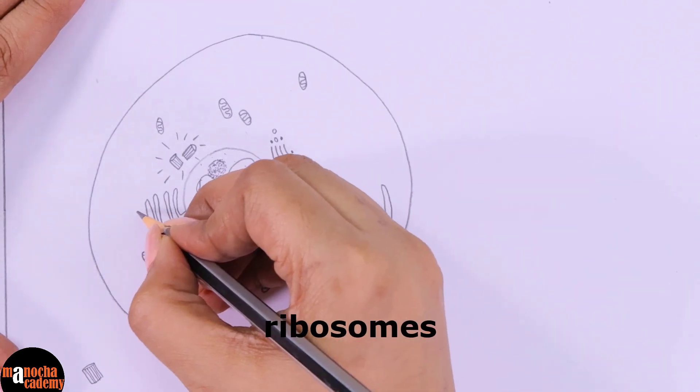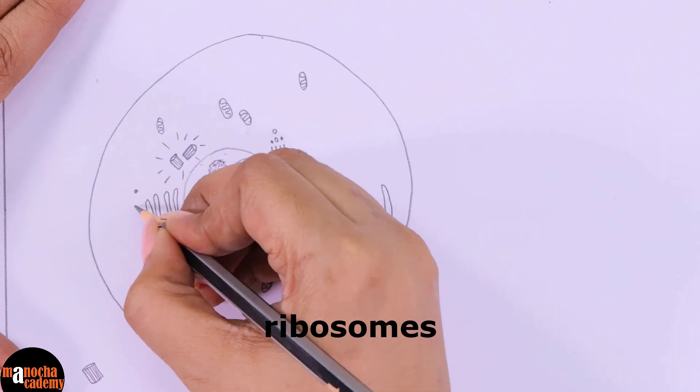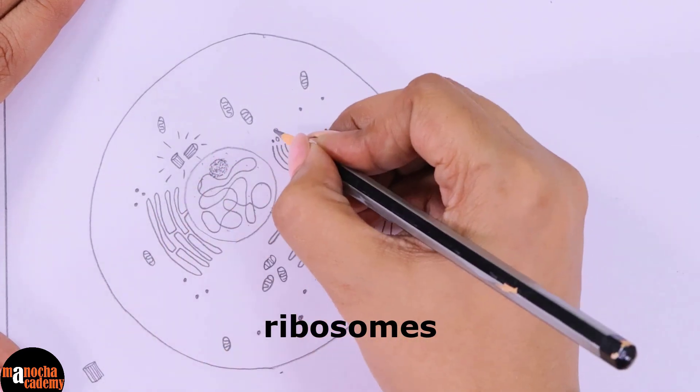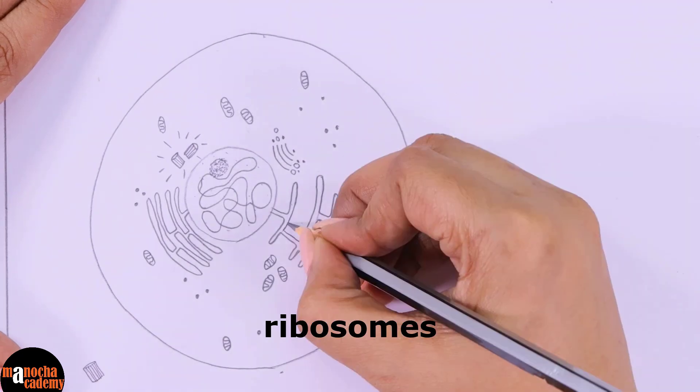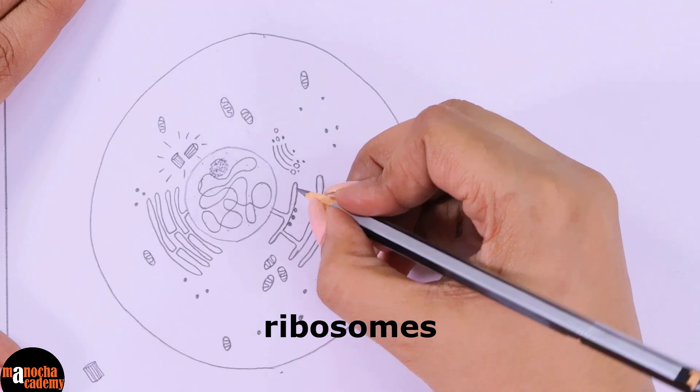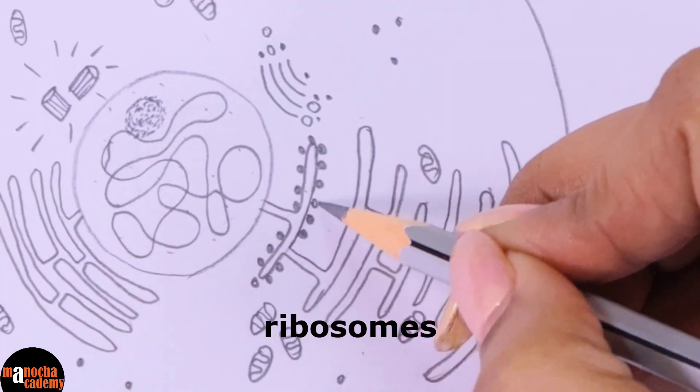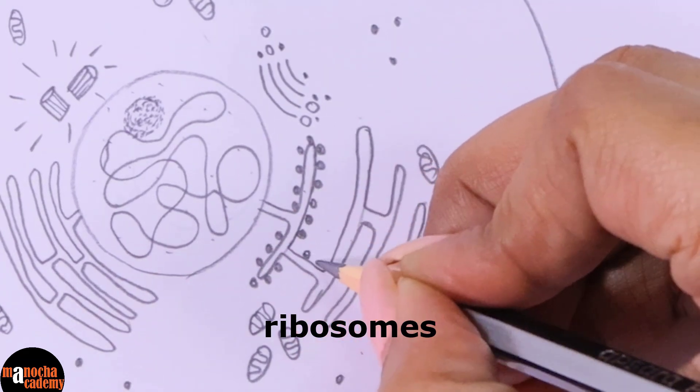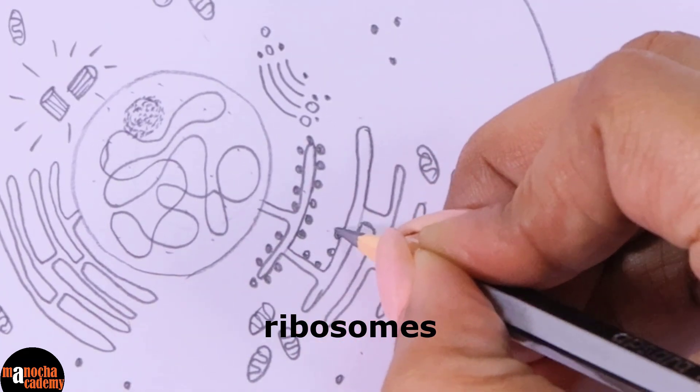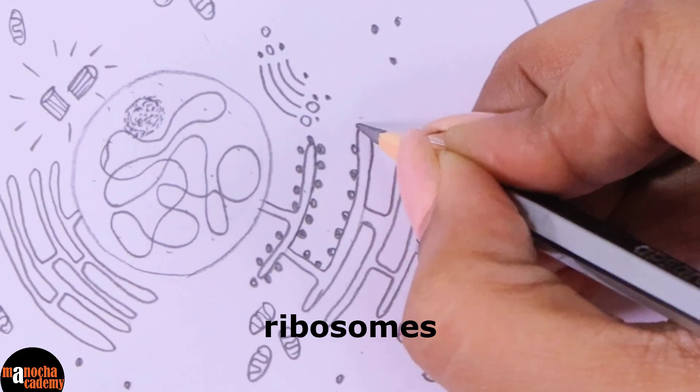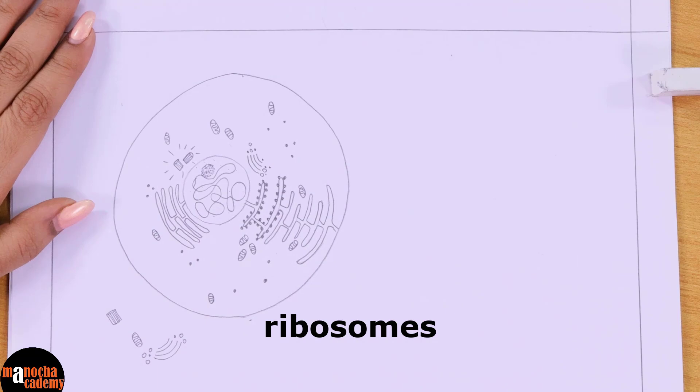Now we will be drawing the ribosomes. The ribosomes should be close to the endoplasmic reticulum and the Golgi bodies in the cytoplasm. As we know there are certain ribosomes attached to the surface of the endoplasmic reticulum. So we have drawn a few ribosomes on the surface of the endoplasmic reticulum. You can draw a few more if you want. If you want, you can just draw a small part as a sample.